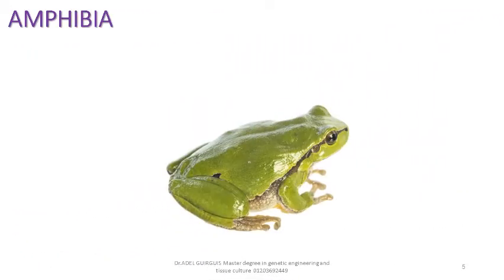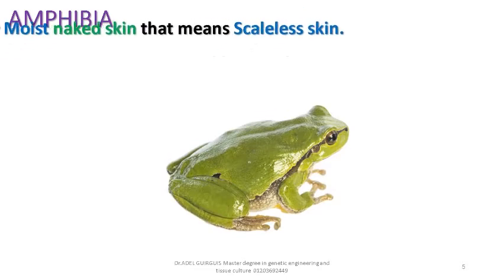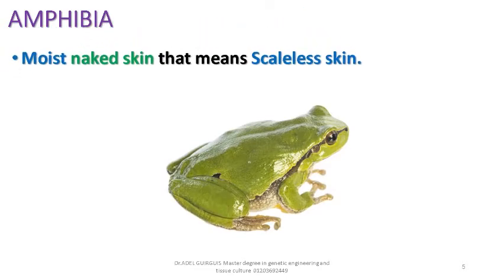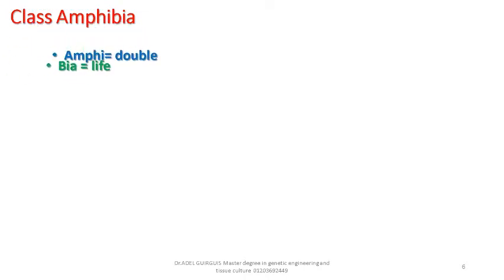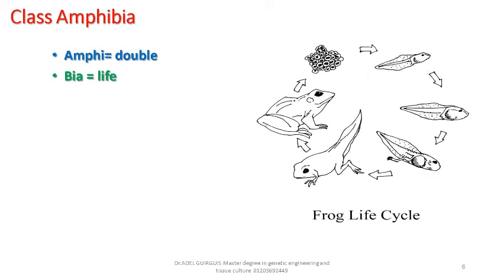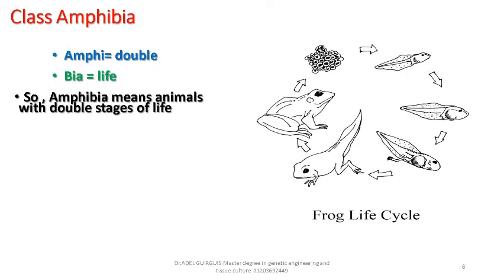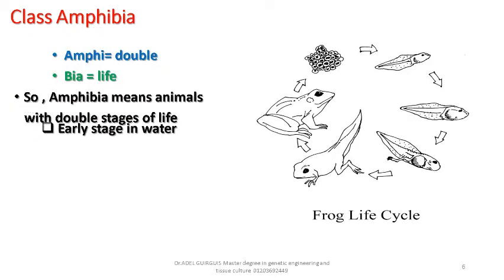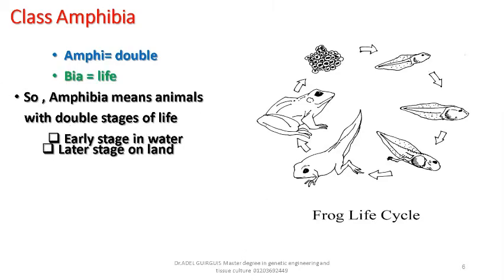Amphibian animals are covered with moist naked skin — that means scaleless skin. The word 'amphi' means double, and 'bia' means life, so literally amphibia means animals with double stages of life: an early stage in water, which are larvae, and a later stage on land, which are small and adult individuals.